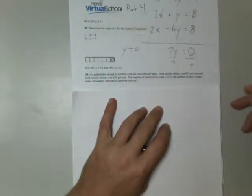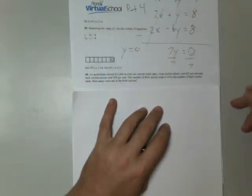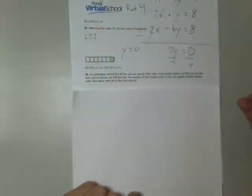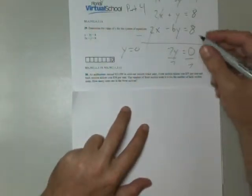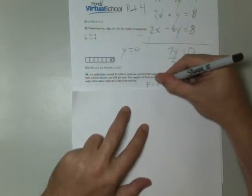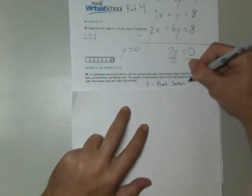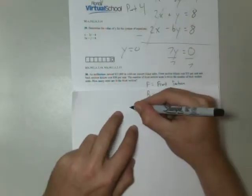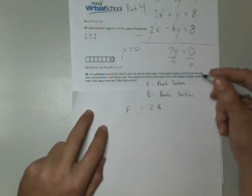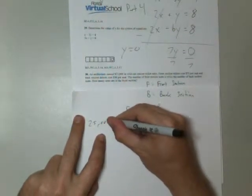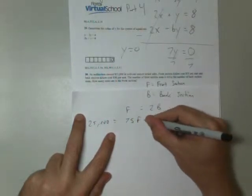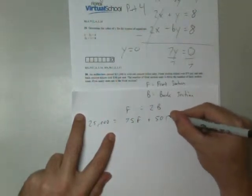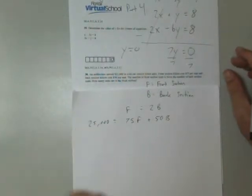Number 30. An auditorium earned $25,000 in ticket sales. Front section tickets cost $75 per seat and back section tickets cost $50 per seat. The number of front section tickets is twice the number of back section tickets. How many seats are in the front section? This is going to be a system of equations. We're going to set F as front section and B as back section. Front is twice back, and $25,000 equals $75 times the number of front tickets sold plus $50 times the number of back tickets sold.